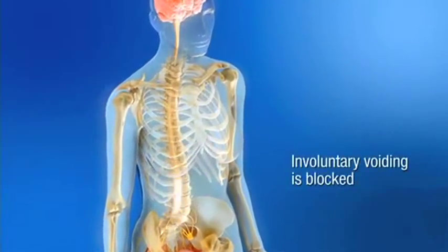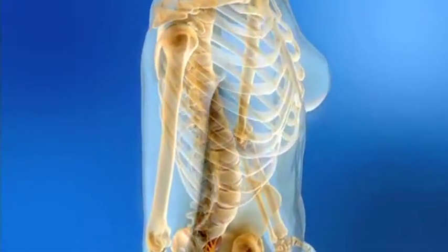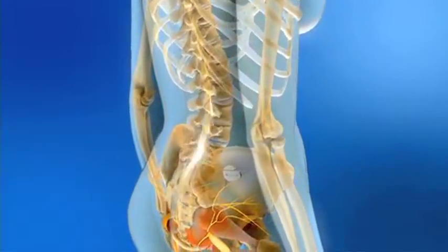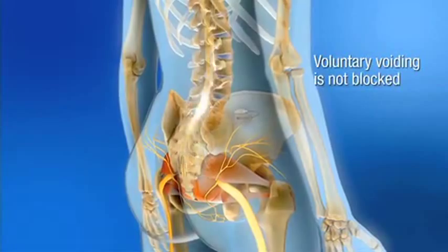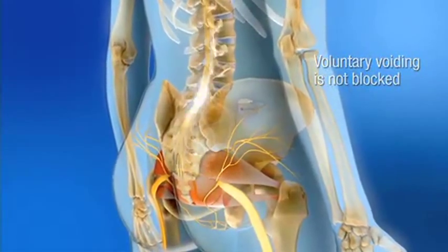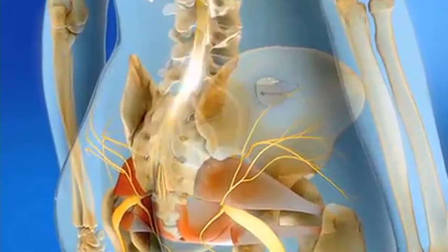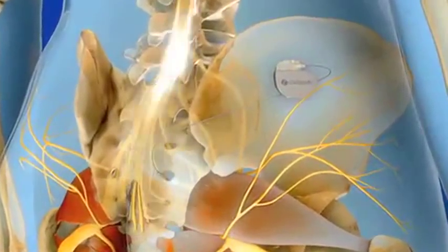This suggests that sacral neuromodulation patients experience normalized sensory signaling to the control centers of the brain, while motor pathways are uninhibited so as not to suppress voluntary voiding. Unlike other therapies that target the bladder, bladder regulation via sacral neuromodulation occurs without physically influencing the bladder or sphincter muscles.